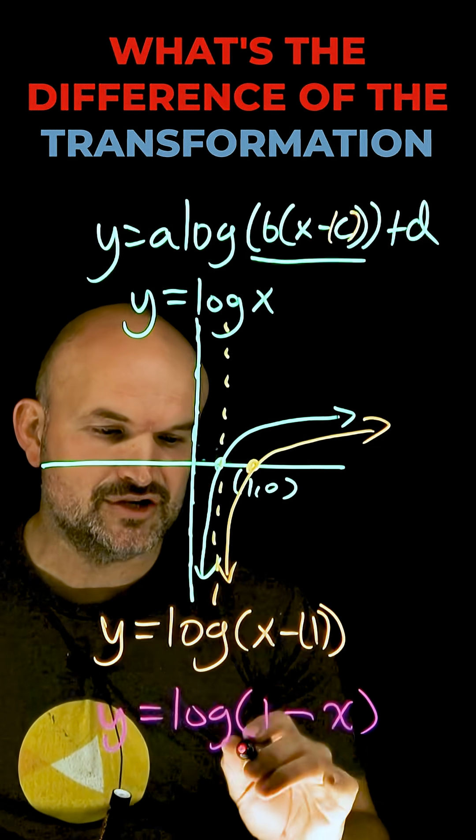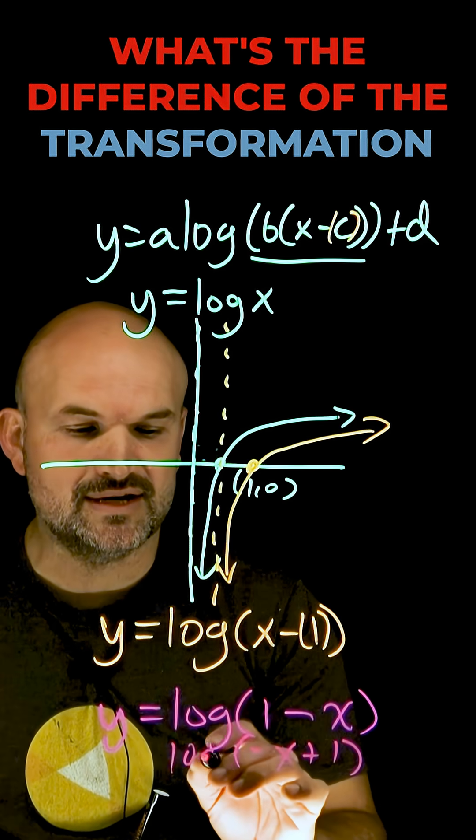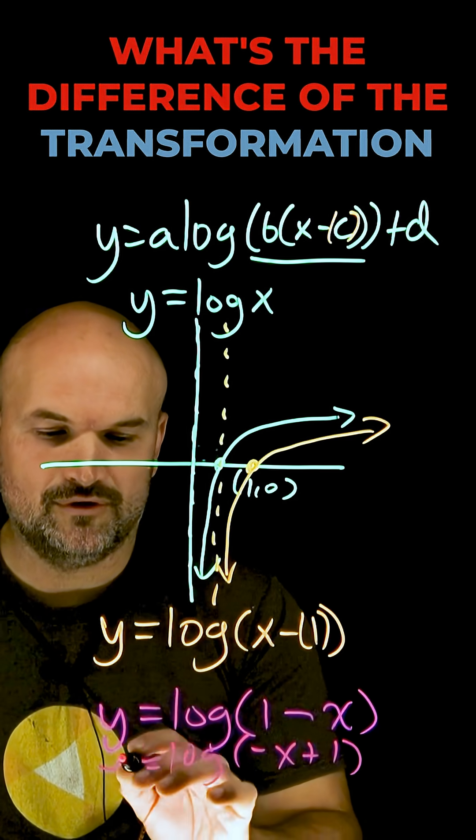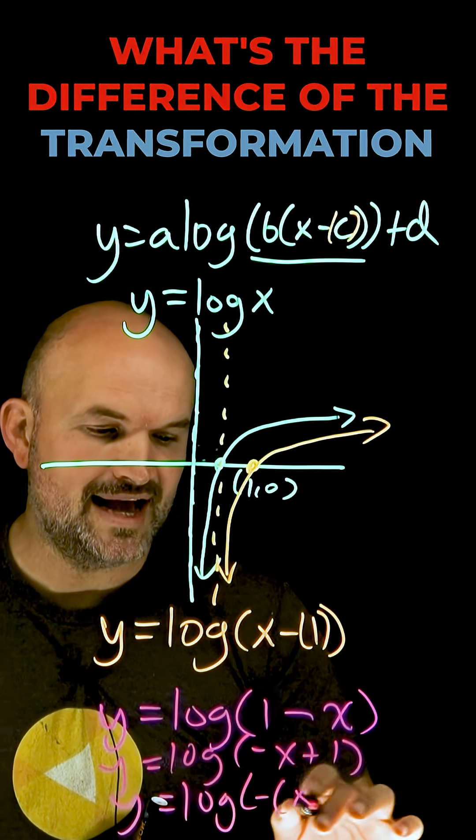I'm going to rearrange my x and my 1 so that's going to be a negative x plus 1, and then I'm going to factor out my negative 1. So therefore what I'll have is y equals a log of negative x minus 1.